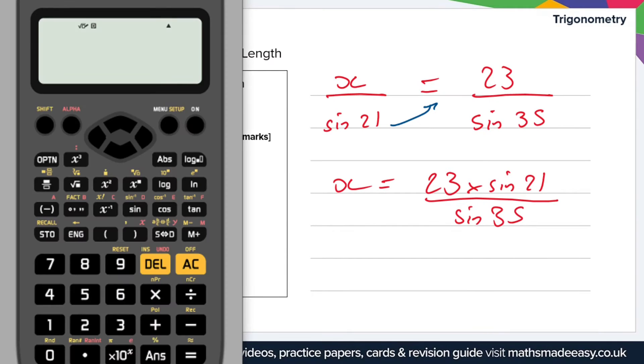We're dividing that by sine 35. Let's just whack all that into the calculator. We'll have a fraction, 23 times sine 21, dividing that by sine 35. Remember to close the brackets on these calculator inputs, because it might mess up the calculation.